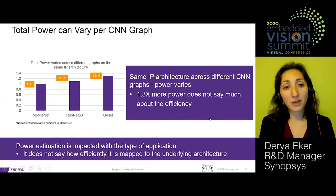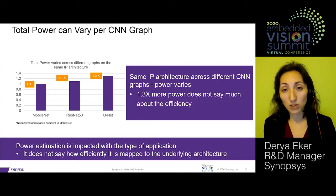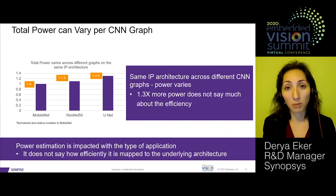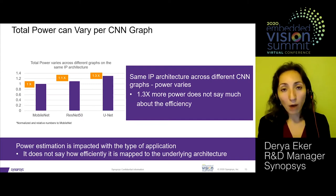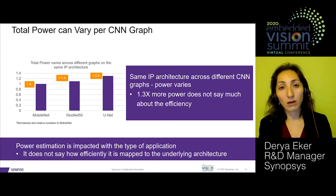Total power may also vary on the same IP architecture across different benchmarks. Absolute power changes across different applications, and while this shows whether your design fits in the power budget, it doesn't say how efficiently the application is mapped. You need to link power to system performance to evaluate your system's efficiency in a complete and comprehensive way.